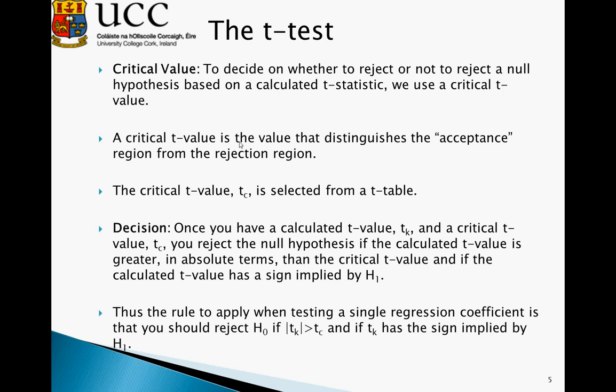Thus, the rule to apply when testing a single regression coefficient is that you should reject H0 if the absolute value of the t-statistic is greater than the t-critical.